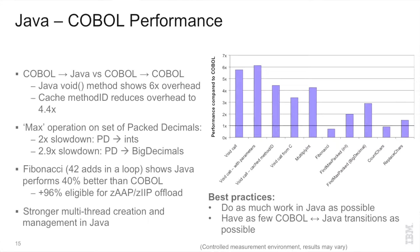With 1x as the baseline, we see that for Fibonacci and count characters — very simple computations — COBOL invoking the Java implementation actually outperforms the COBOL-to-COBOL version. Java has the benefit of dynamic profiling within the runtime. It can examine which paths are being executed and dynamically understand what hardware you're running on, optimizing the code for that. So with something relatively simple like a Fibonacci sequence, Java is actually outperforming the equivalent COBOL version.